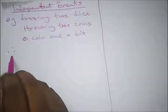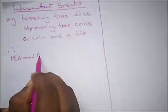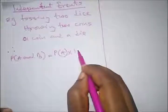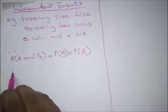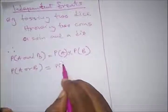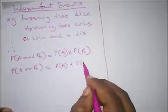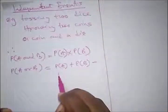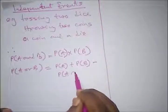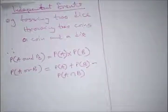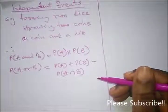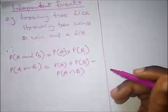The formula for independent events: the probability of A and B occurring is P(A) multiplied by P(B). Also, the probability of A or B occurring is P(A) plus P(B) minus P(A and B) occurring together. We're going to see questions on this in our next video. Thank you for staying tuned to Destined to Win Tutorial — please like, subscribe, and share this video.